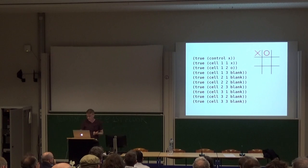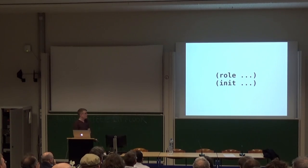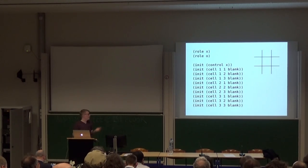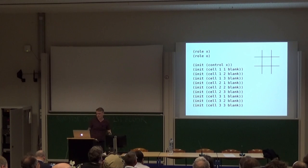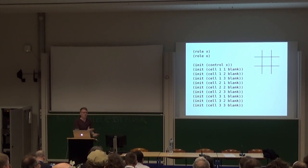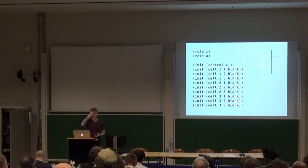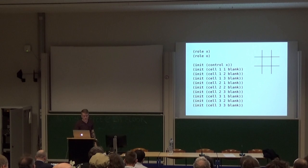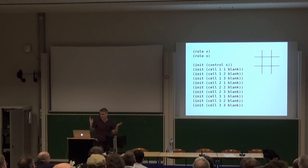Now we can start defining how a game works. We start with two predicates: we define the roles of the game and we define the initial state of the game. For tic-tac-toe we just have two roles: x and o. Every GDL game has a fixed number of roles — you can have one or more, but they have to be fixed; you can't have a variable number of players. And we define the initial state by just listing out the set of facts, saying init instead of true. So in tic-tac-toe, X starts and everything is blank.